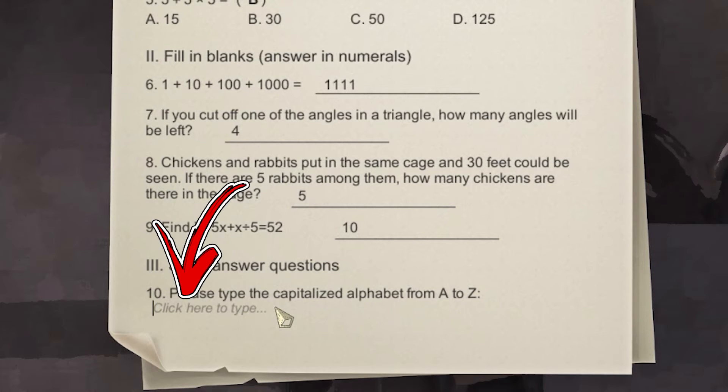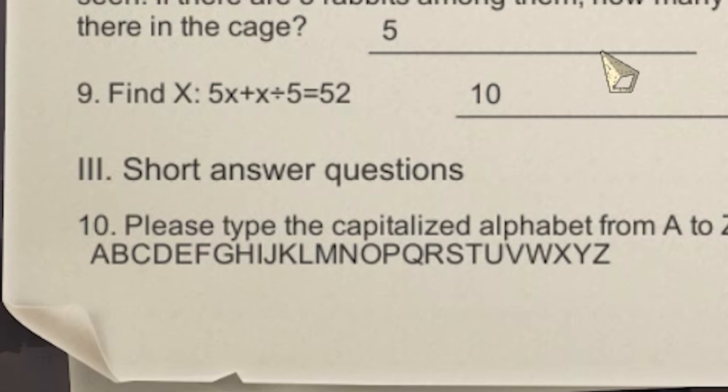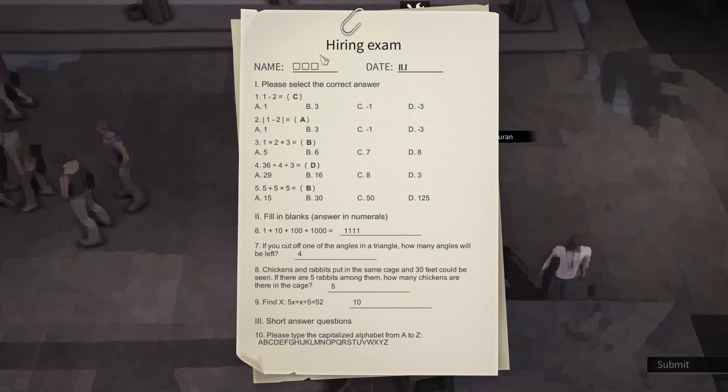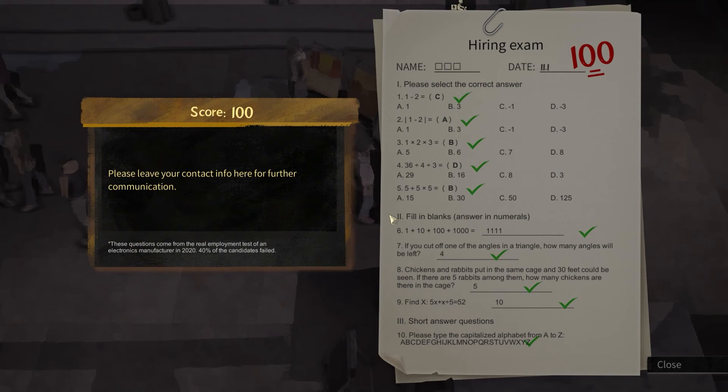For the last question you have to write the whole alphabet and if you want, pause the video and copy the one written in this video. Once done, click the submit button and at the end you will receive a score of 100.